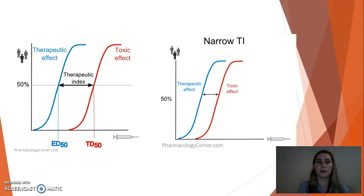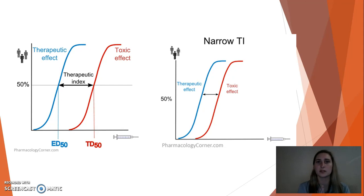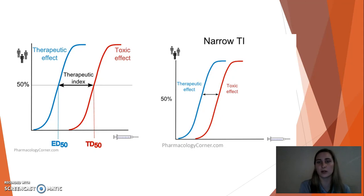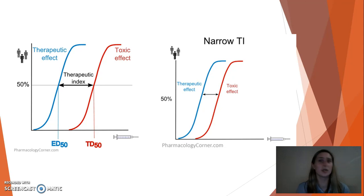If you look at the picture on the right, you will see a narrow therapeutic index. The dose in that space is considerably smaller, making the drug less safe. For example, one pill gets you the desired effect, but if you take another pill you reach that TD50, experiencing upset stomach or really bad cramps. We want a drug with a wider therapeutic index so that it can be safely administered.